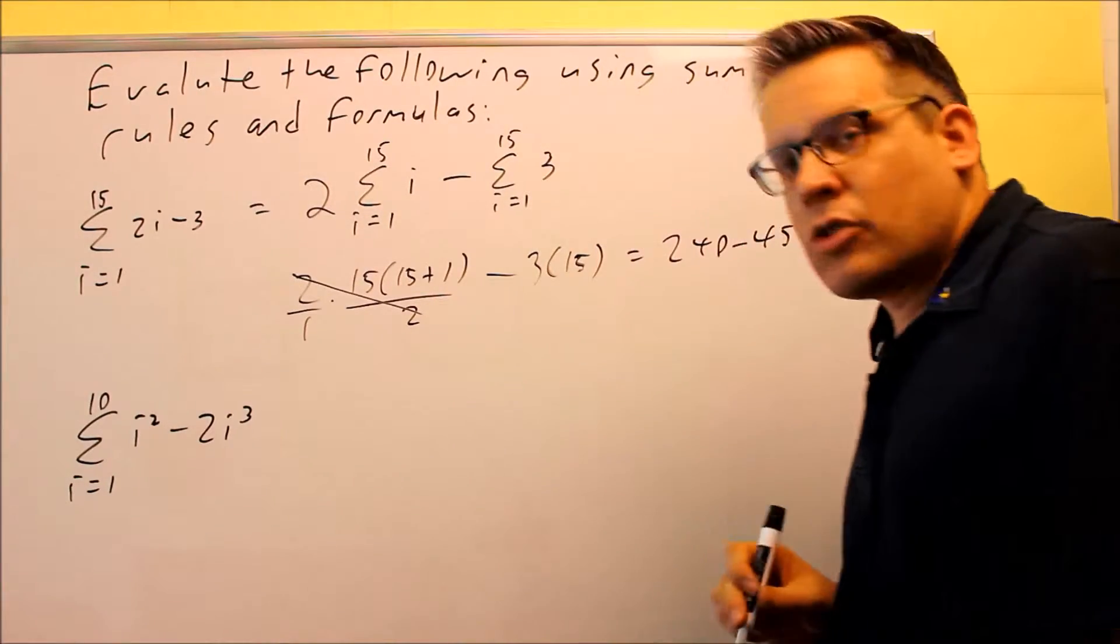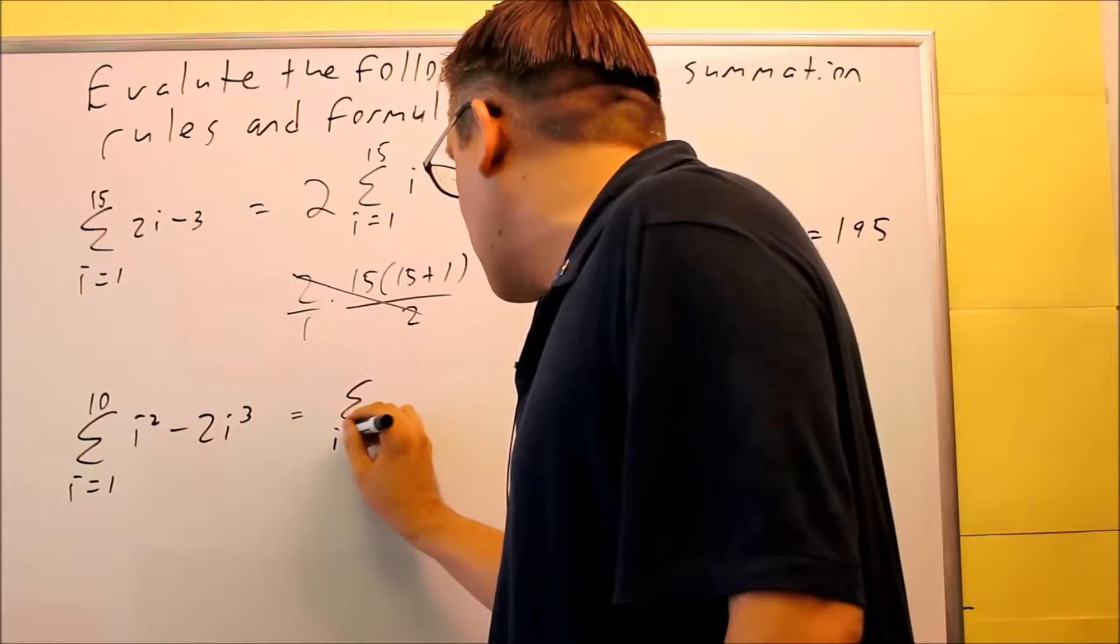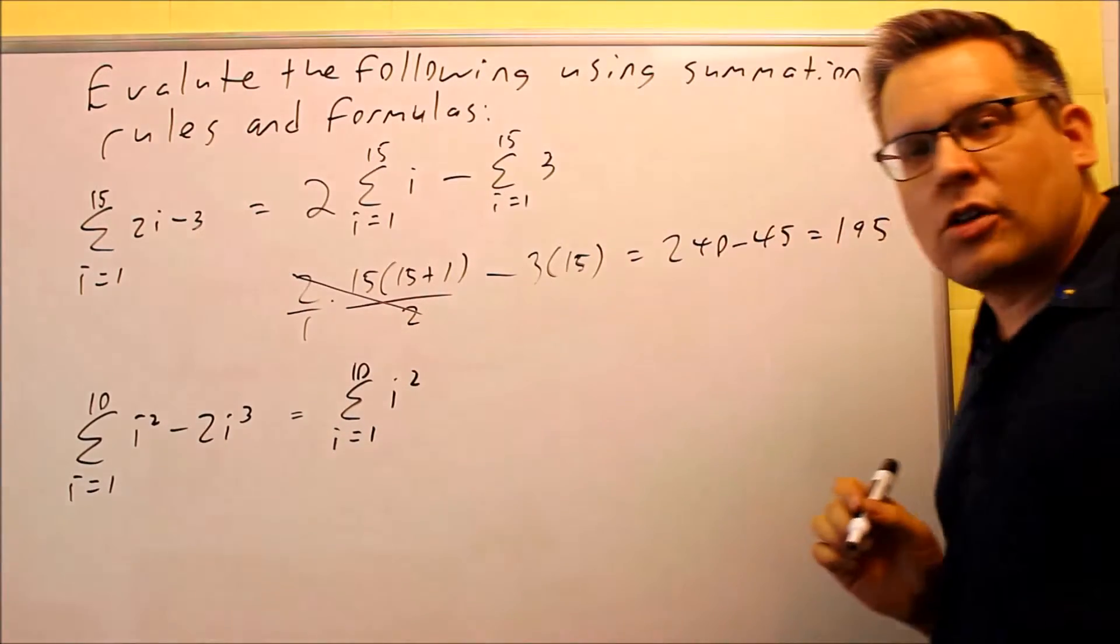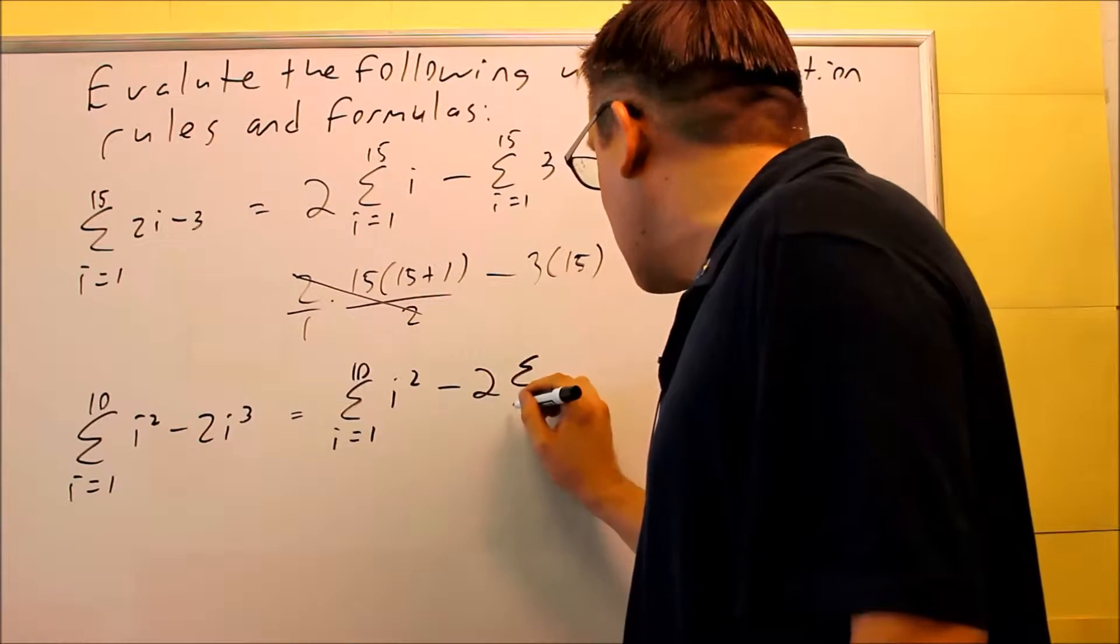Now we're going to do the same thing for this one down below. We want to use the rules to split this up. So the first one, i equals 1 to 10 of i squared. Not much more I can do with that one. Then I have a minus 2 I want to pull on the outside of the summation.